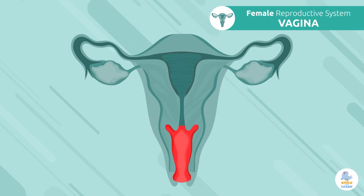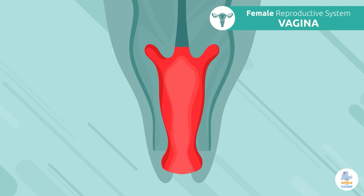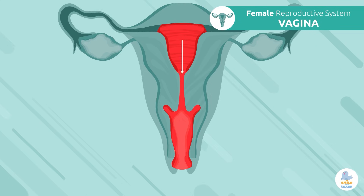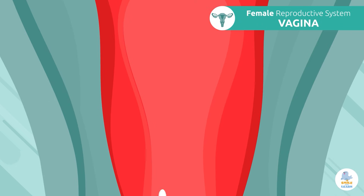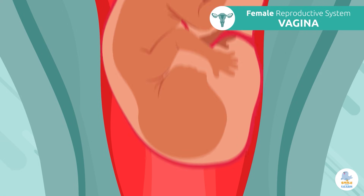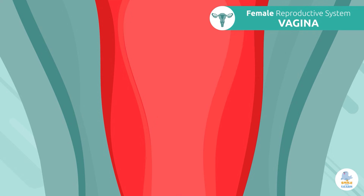Vagina: the vagina is a canal that connects the uterus and opens outside the body. This is the passageway where sperm cells enter and where the baby comes out when giving birth.